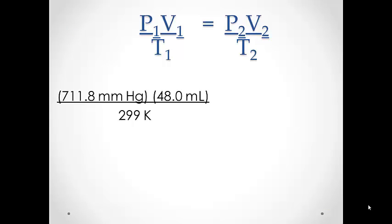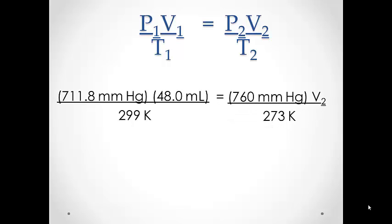Now that we know the pressure of our hydrogen gas, we can adjust our measured volume to the volume it would be if we had performed the lab at standard temperature and pressure. Our initial pressure was 711.8 millimeters of mercury, our measured volume was 48.0 milliliters, and our initial temperature was 26 degrees Celsius, or 299 Kelvin when converted. We want to convert to a new volume at 760 millimeters of mercury and 273 Kelvin. In the end, we get an adjusted volume of 42.50 milliliters of hydrogen gas.